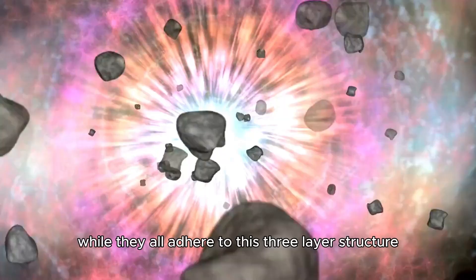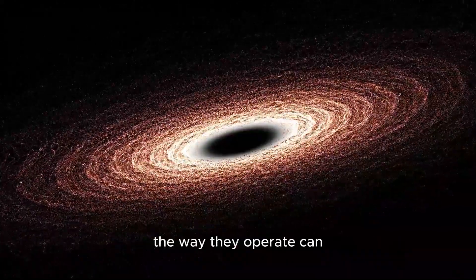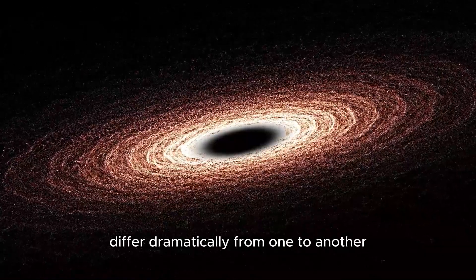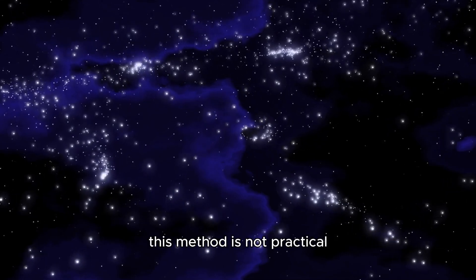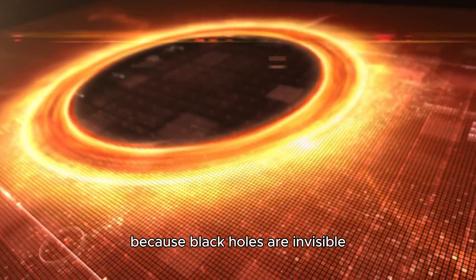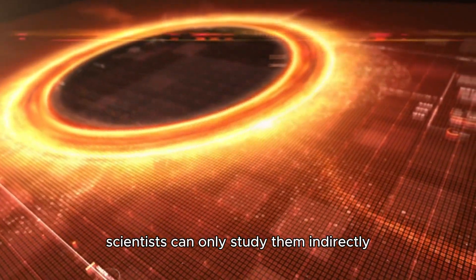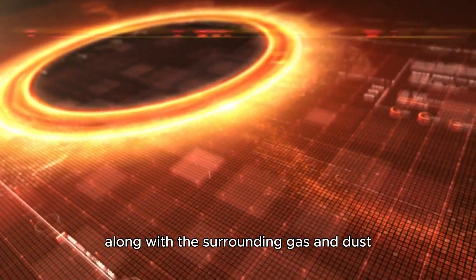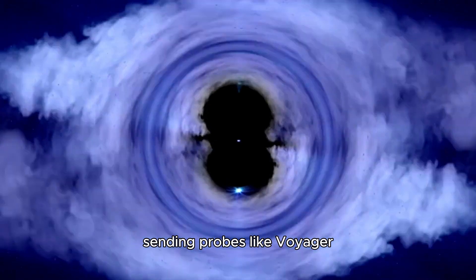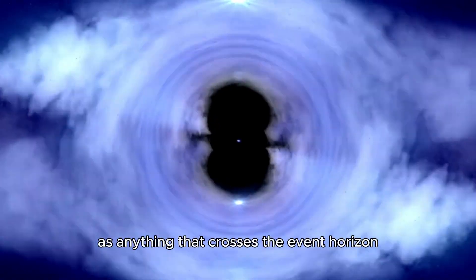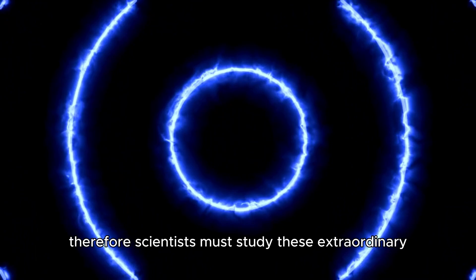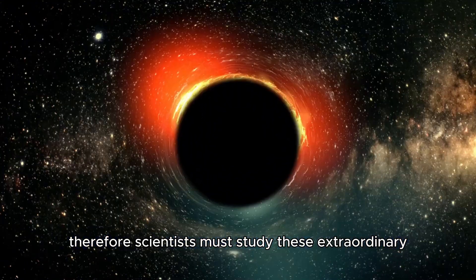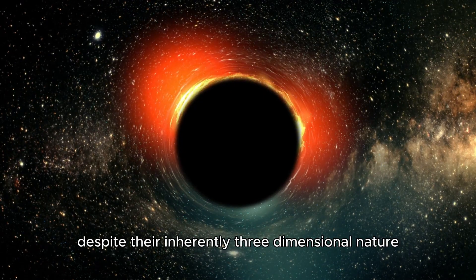What's even more fascinating and troubling is that no two black holes are exactly the same. While they all adhere to this three-layer structure, the way they operate can differ dramatically from one to another. Normally, scientists would rely on telescopes to observe celestial objects, but when it comes to black holes, this method is not practical because black holes are invisible. Scientists can only study them indirectly by observing the radiation they emit, along with the surrounding gas and dust. Sending probes like Voyager to explore black holes is out of the question, as anything that crosses the event horizon would be drawn into the singularity. Therefore, scientists must study these extraordinary objects through a two-dimensional lens, despite their inherently three-dimensional nature.